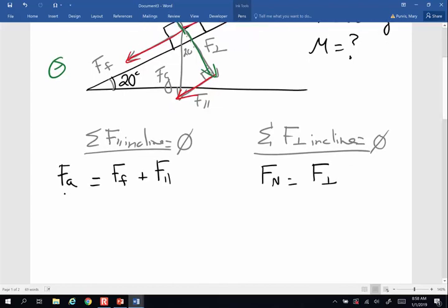Let's put our numbers in. Force applied, we were told that the force applied is 150 newtons. Friction force, we can replace with mu times normal force, and force parallel is going to be equivalent to the force of gravity. This is the opposite side, so times the sine of 20 degrees.